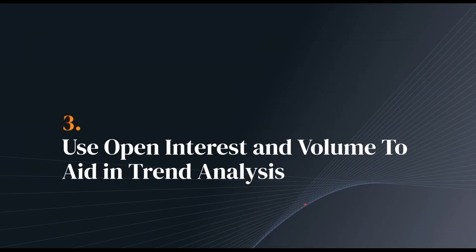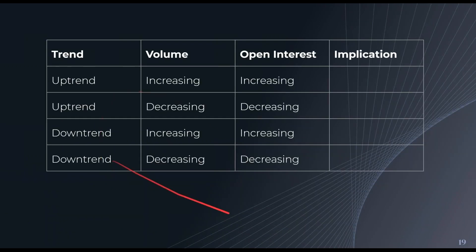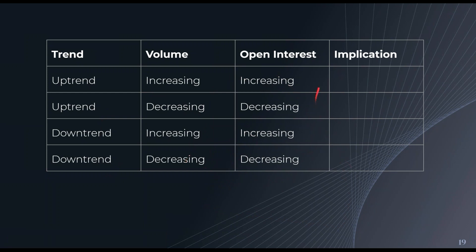Now we know what open interest and volume are, let's look at how they can aid us in trend analysis. In an uptrend where both volume and open interest are increasing, total trade activity is increasing and the number of market participants are increasing. We're seeing an increase in demand and interest in the asset being traded, so open interest and volume agree with our analysis — we are in a strong uptrend.